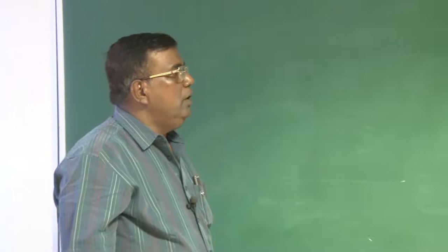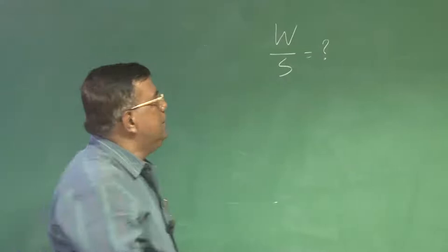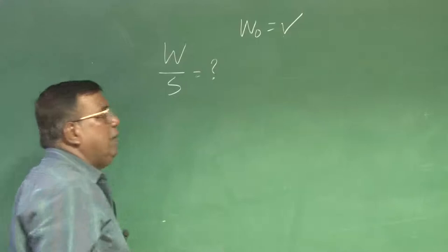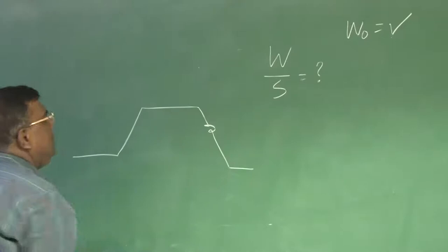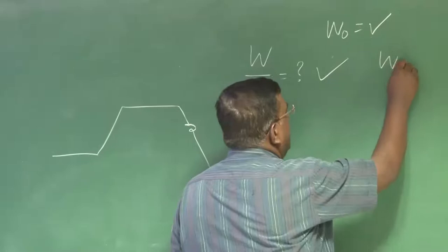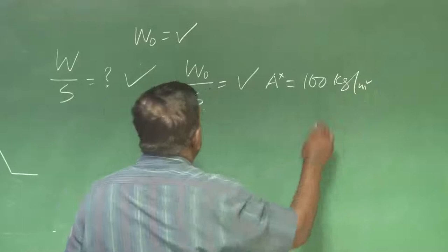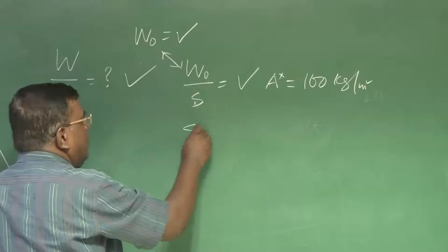Good morning. We have gone through a rough method to get W by S. The final aim was: we have already calculated W naught, and we know how to calculate W naught by meeting all the mission requirements and taking appropriate care about fuel consumption. So, if I have selected W by S as some value, then I know W naught by S is that value — say A star, let us say 100 kg per meter square — and since I already know W naught, from here I get the value of S.